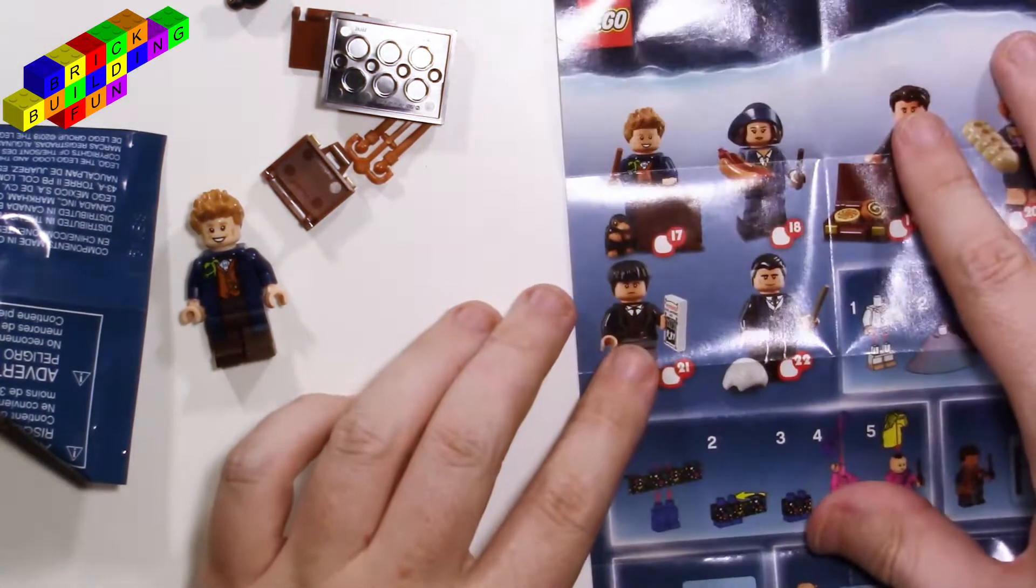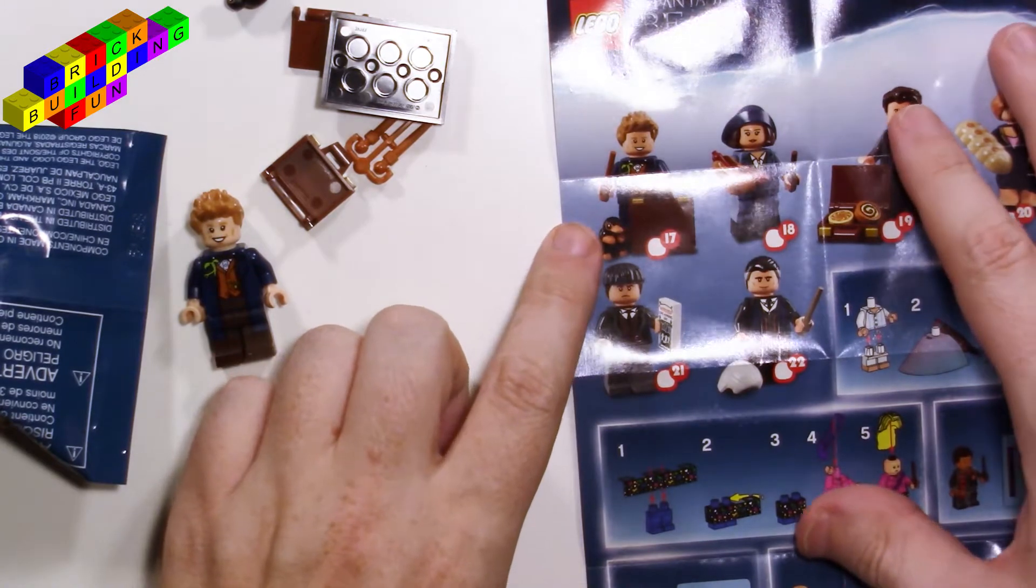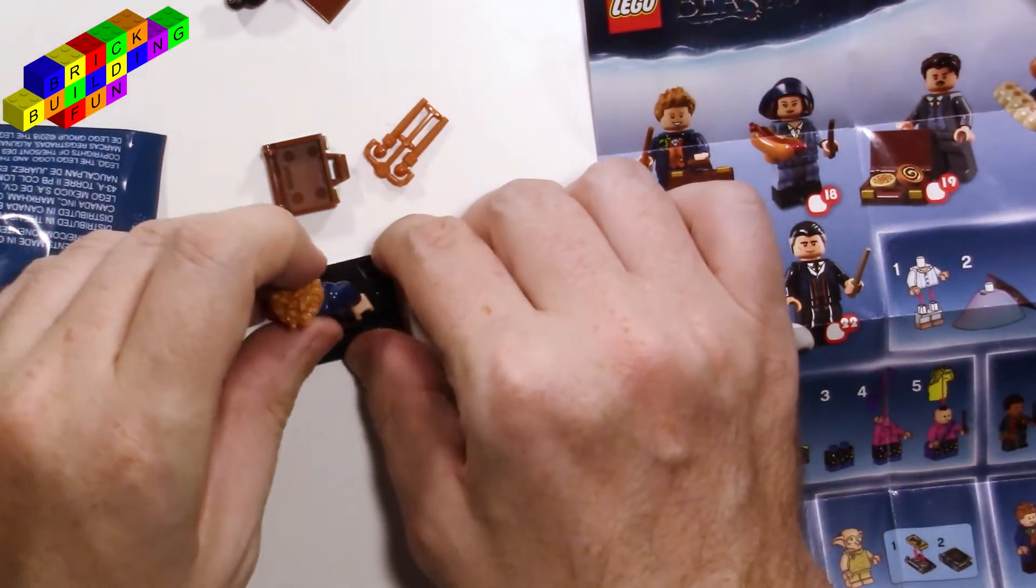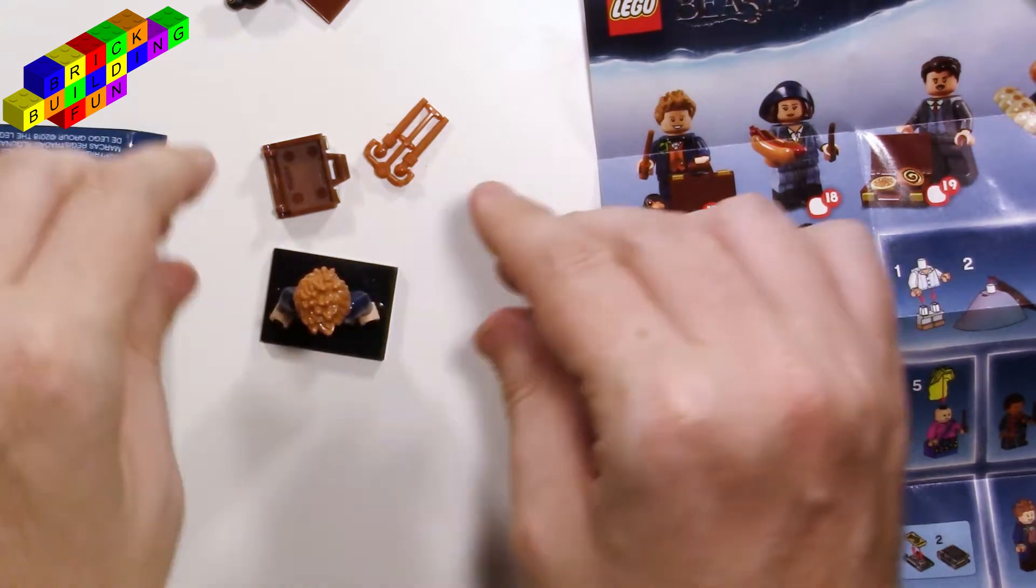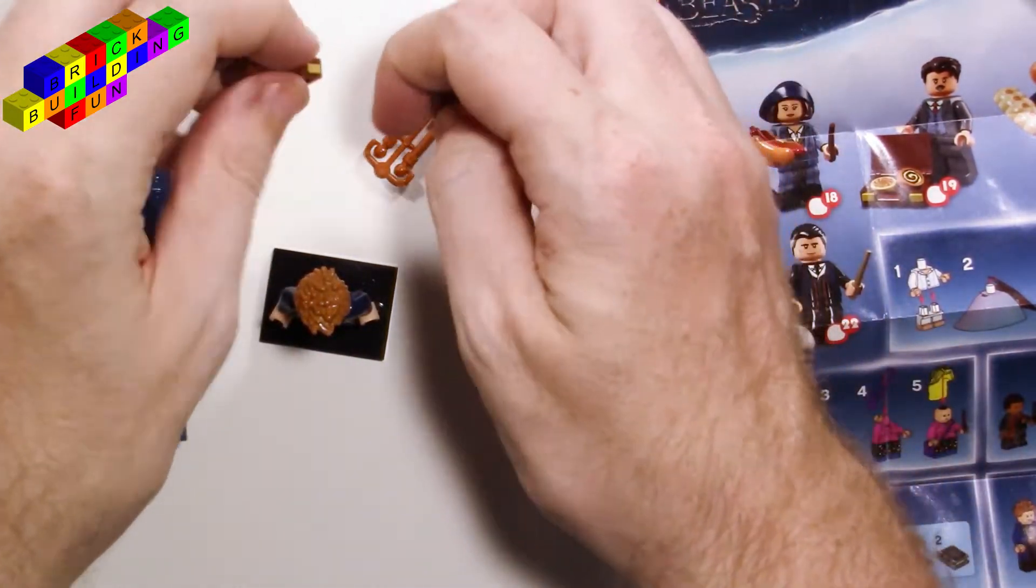Of course he can't be on the front. Here he is. Yeah, I think that is him. Yeah, he's got the briefcase where his world is inside there. His little... Let's put all this together.